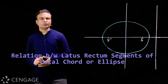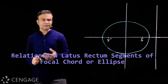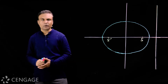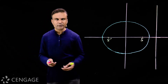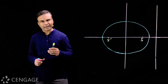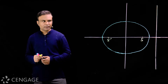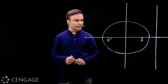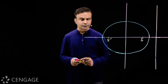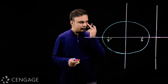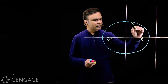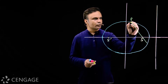We have one very interesting property related to focal chord of ellipse. A focal chord is a chord of a conic passing through its focus. Latus rectum is also one of the focal chords — its speciality is that it is perpendicular to the axis of the conic. Consider this ellipse having foci S and S'. This is the directrix corresponding to focus S. Consider a focal chord through focus S meeting the ellipse at points P and Q.